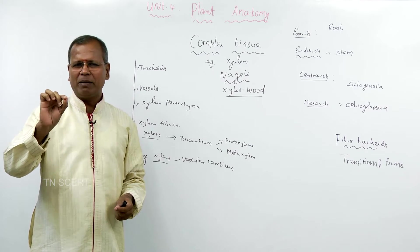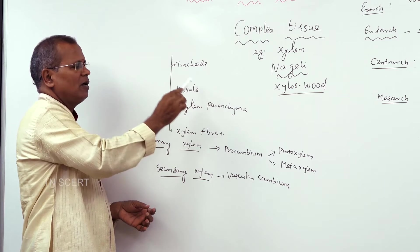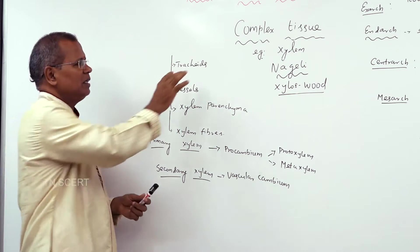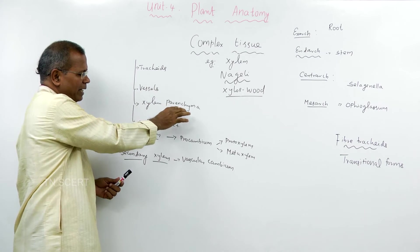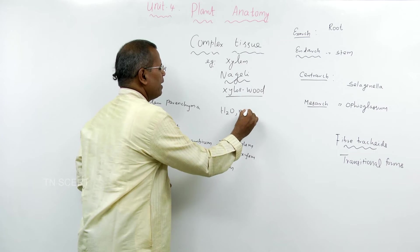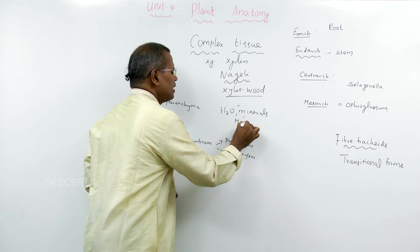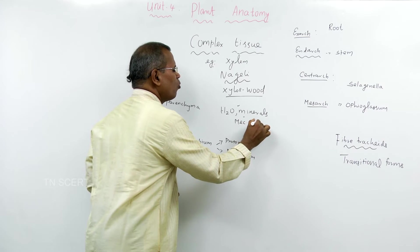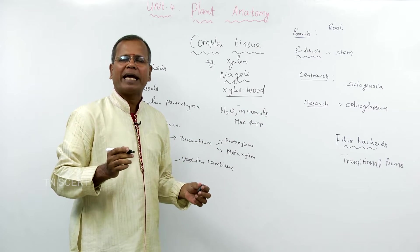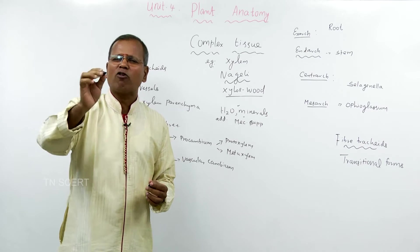Xylem is a complex tissue because it is made up of four types of cells namely tracheids, vessels or the trachea, xylem parenchyma and xylem fibers. The main function of xylem is to conduct water and minerals. It also provides mechanical support to the plant body, additional mechanical support.